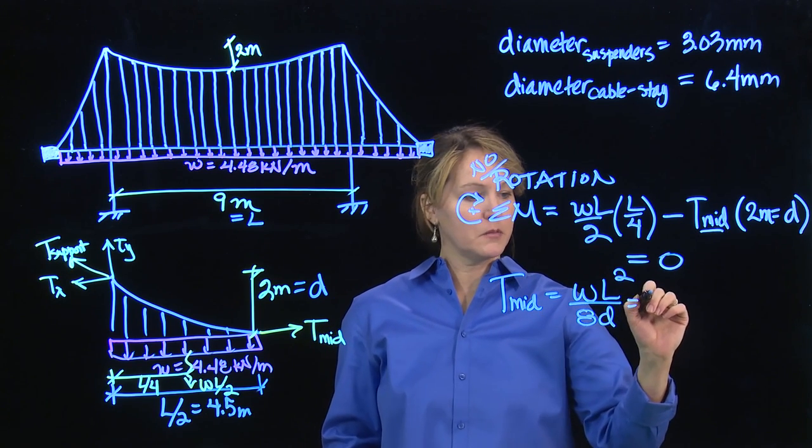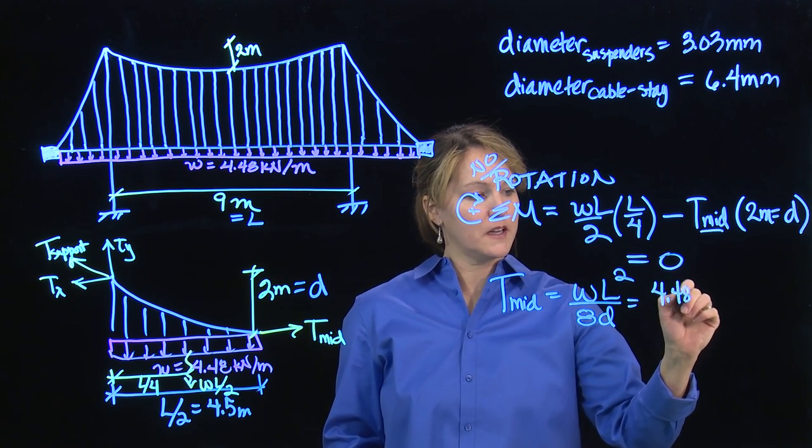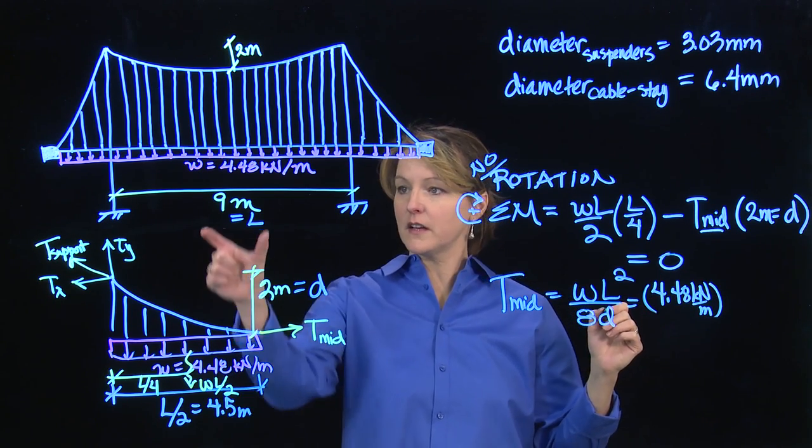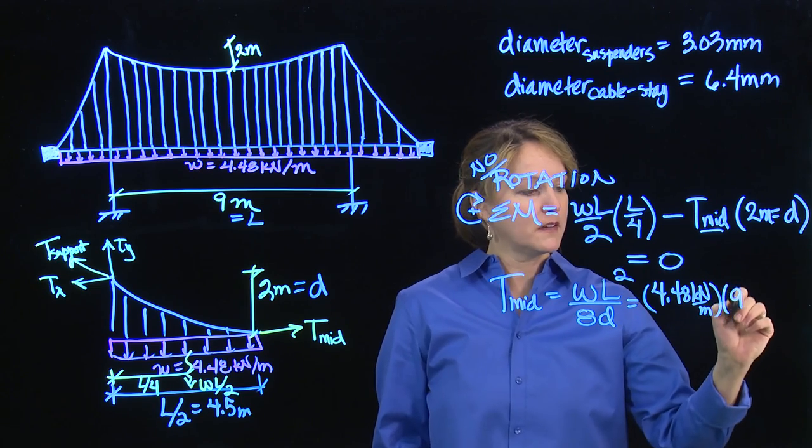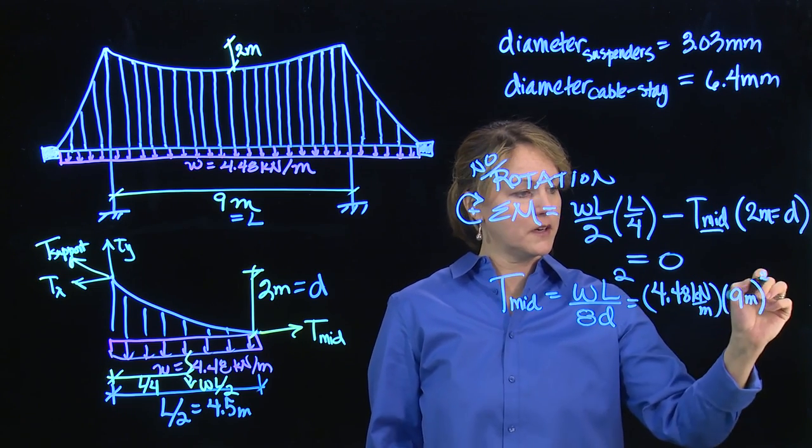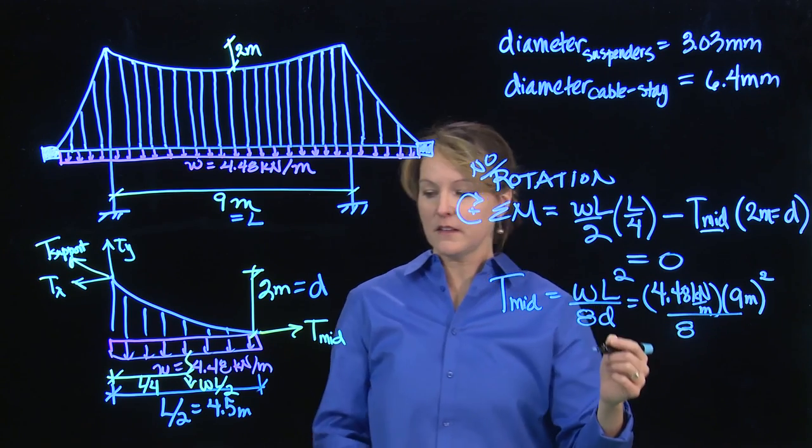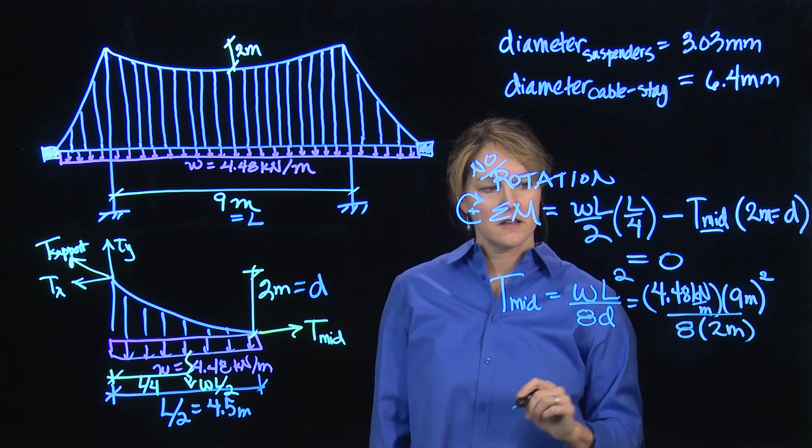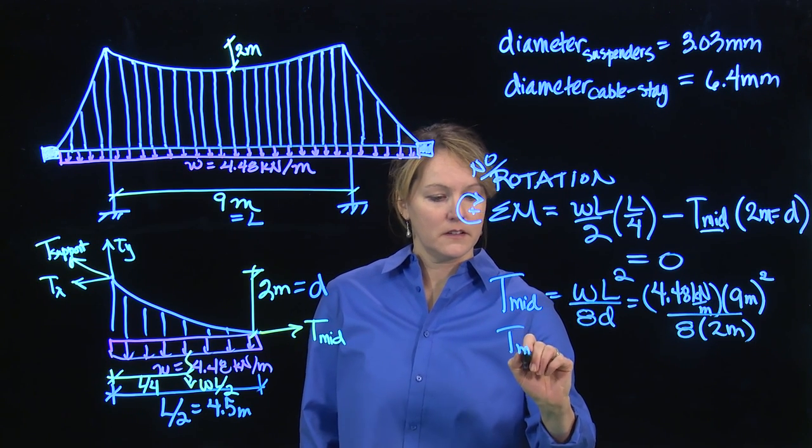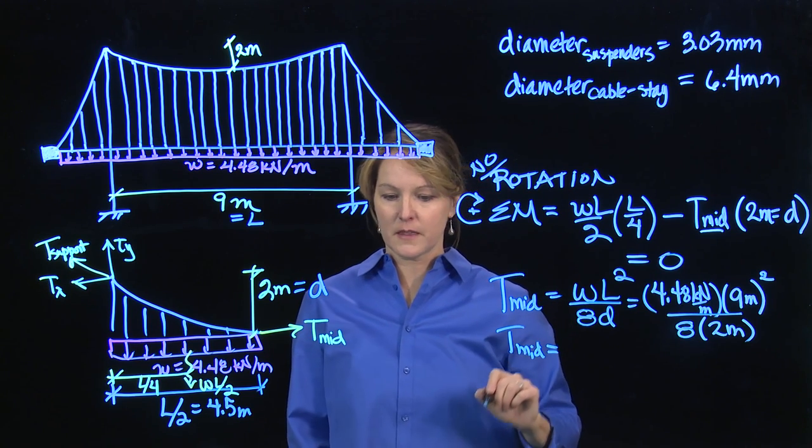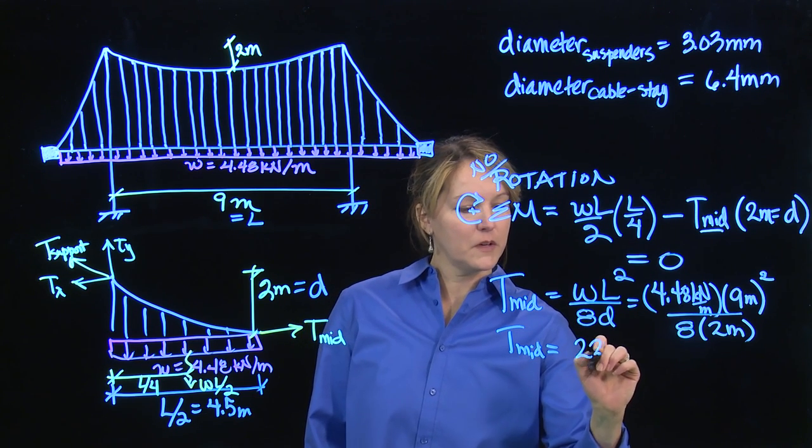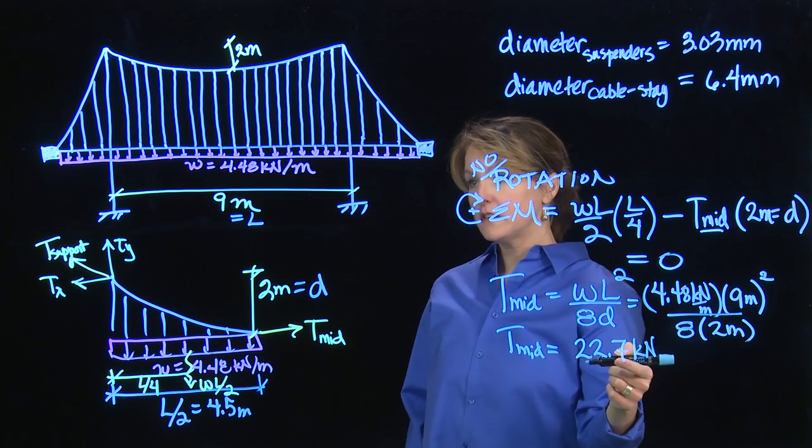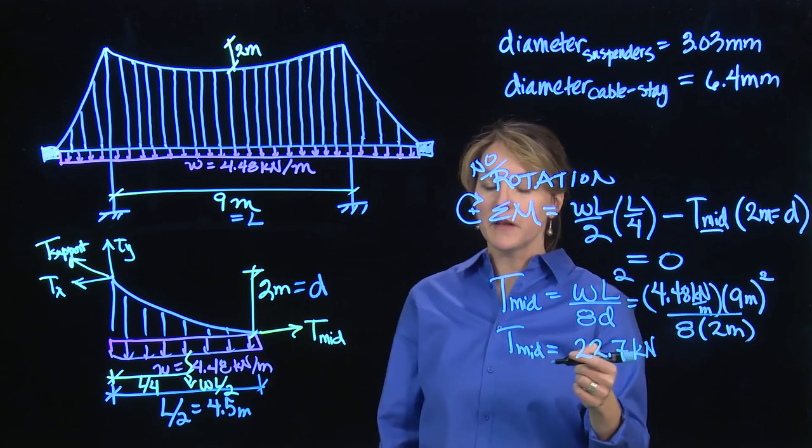And we know all these values, so we know the distributed load, 4.48 kilonewtons per meter. We know the length. Again, I'm using 9 meters as the length. And that squared over 8. And then this D is the sag, and that is 2 meters. And I can calculate this T tension force at the middle. That tension force at the middle ends up being 22.7 kilonewtons. So that's the tension force maximum at the middle.